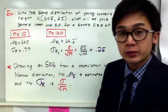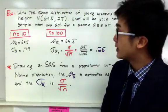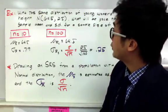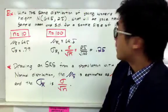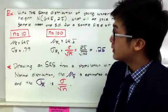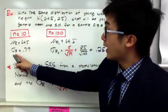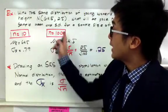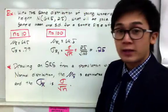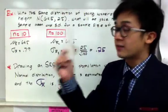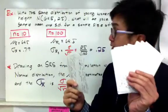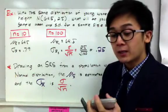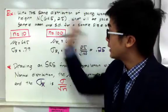Now let's use the same normal distribution and change our sample size. With the same distribution of young women's height — mean 64.5 and standard deviation 2.5 — what will be the new sample mean and standard deviation when the sample size is 100? For the sample size of 10, mu of x was 64.5 and the standard deviation was 0.79. Now let's add 90 more women to our sample and compute for their sample mean and standard deviation.